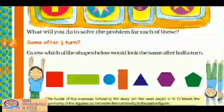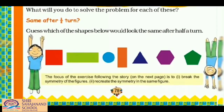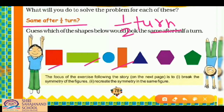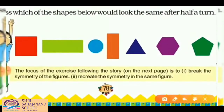For each new locker, we will do the same thing the king's daughter did. Now let's look at the exercise 'Same after half turn.' The question is: guess which of the shapes below would look the same after a half turn. We have to find which pictures will look the same if given a half turn. Half turn means upside down — a half rotation.